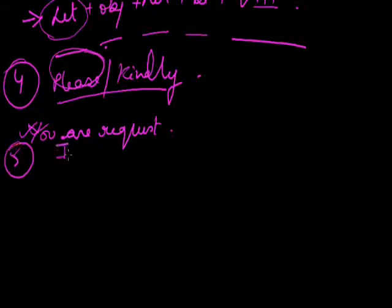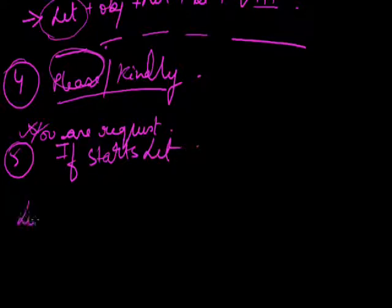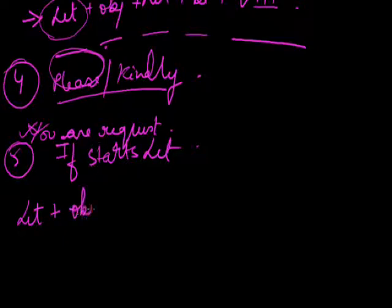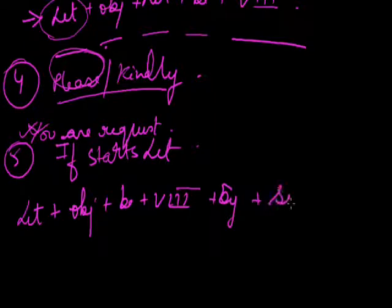If an active sentence starts with 'let,' the passive again will start with 'let' only. There are three cases where the passive starts with 'let': order or command, active sentence starting with 'do not,' and active sentence starting with 'let.' The structure is: let + object + be + verb third form + by + subject.